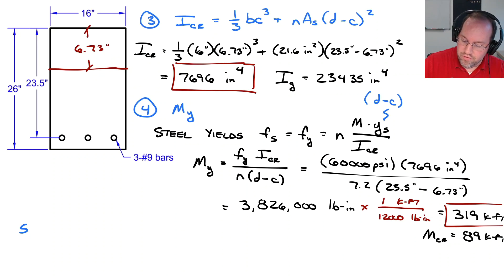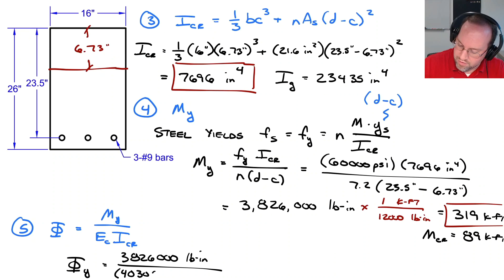Lastly, let's look at our curvature. Now, the curvature is going to be equal to my moment, MY, divided by the modulus, E sub C, and the cracked moment of inertia. So I, once again, have all these quantities, so it's just a matter of plugging them in. So my yield curvature is equal to my yield moment, which is 3,826,000 pound inches, and that's going to be divided by my modulus of the concrete, which is 4,030,000 PSI and 7,696 inches to the fourth for my cracked moment of inertia. And therefore, this is equal to 123 times 10 to the negative sixth one per inch for that curvature.